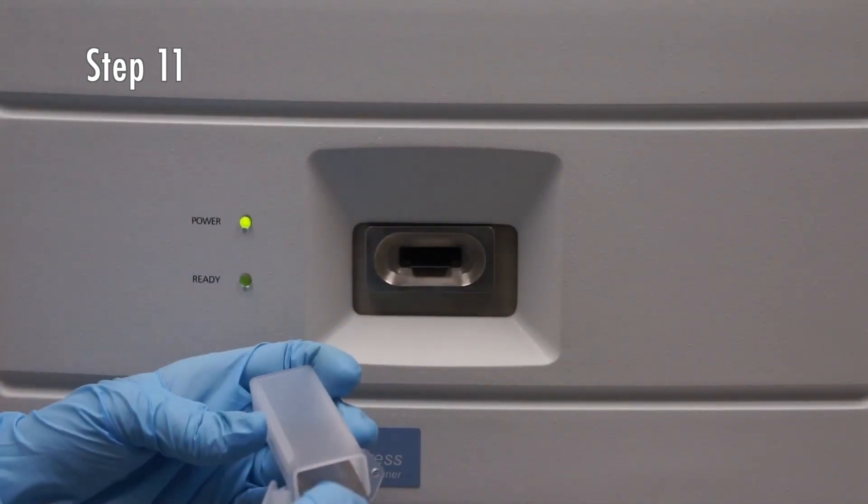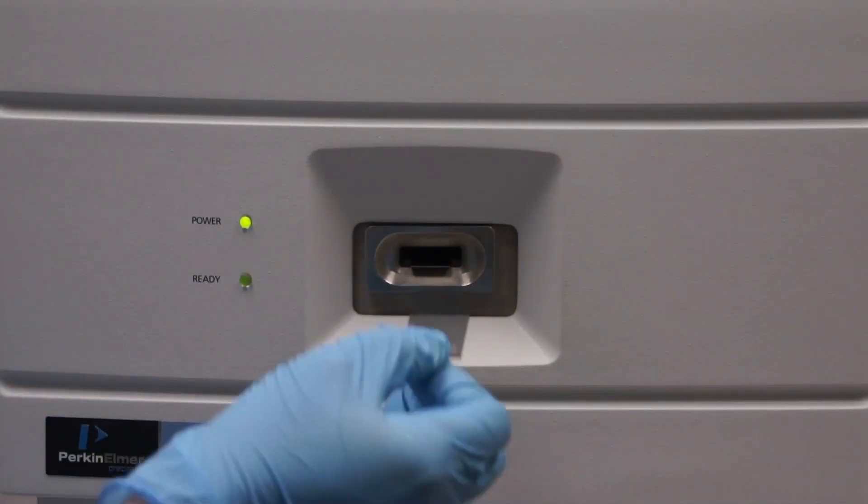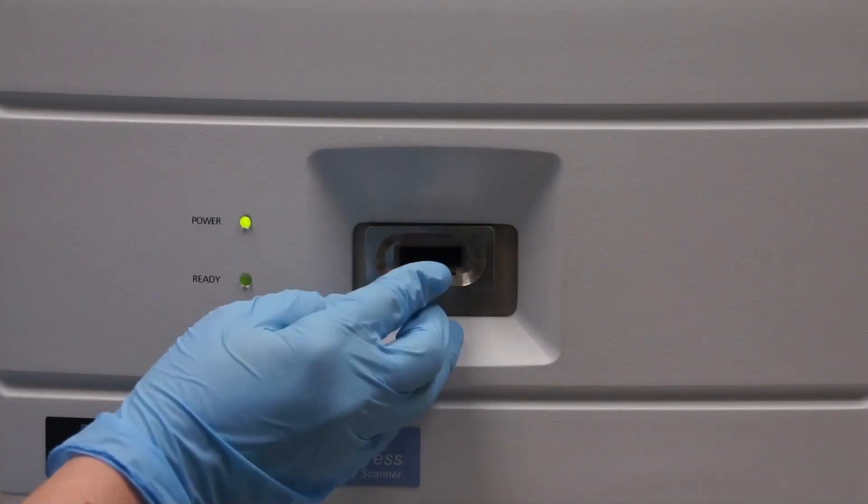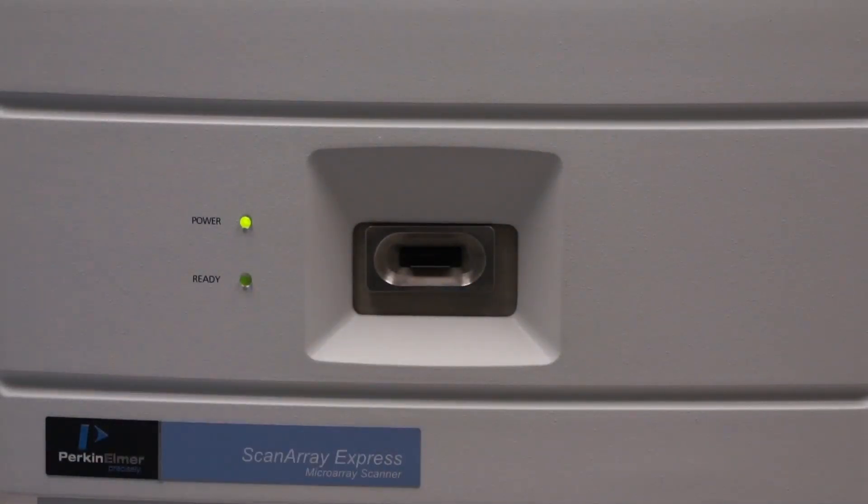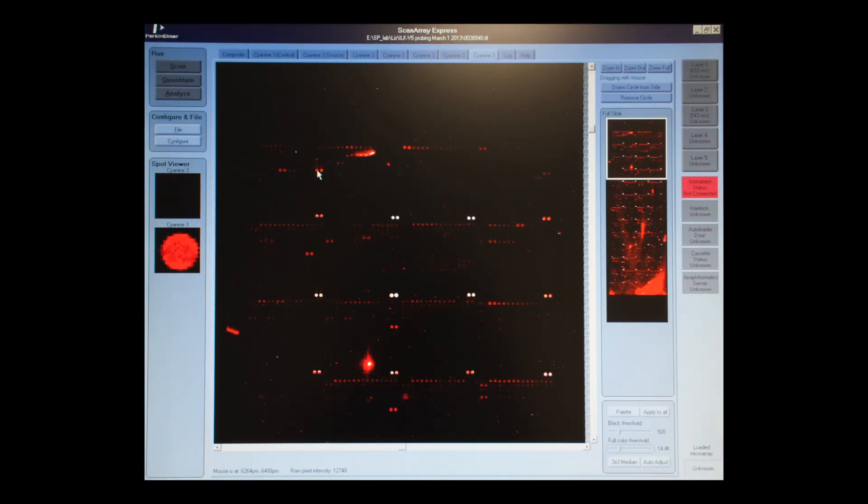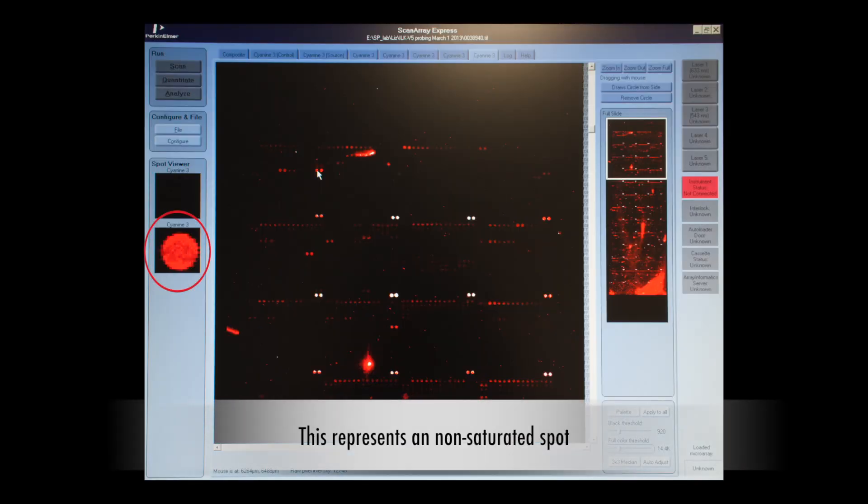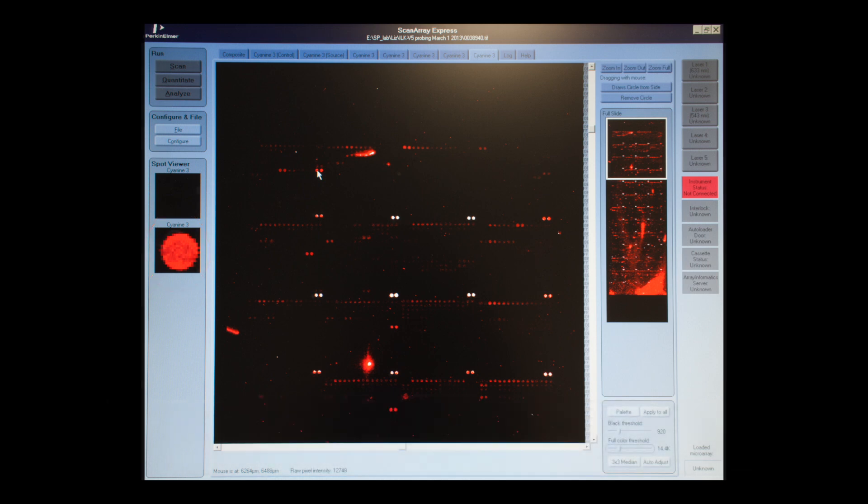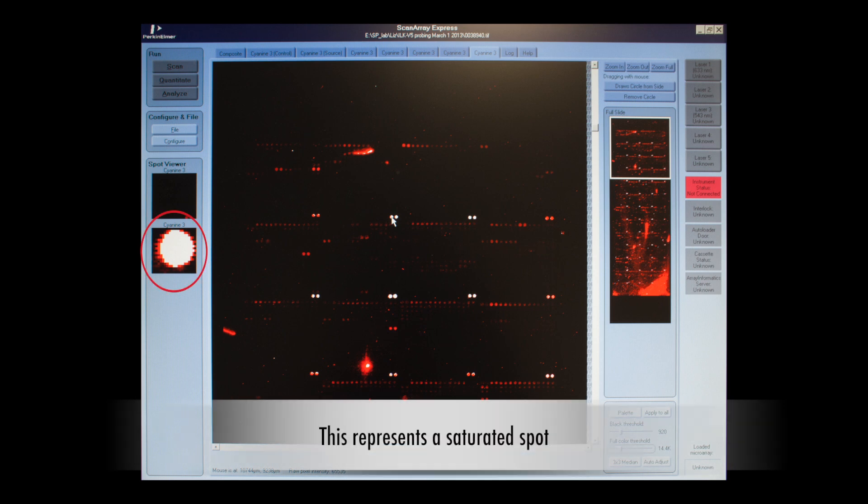Load the array into the scanner after warming up the lasers. Scan the array at a low resolution at 60 PMT to determine the location of the proteins on the slide and the brightness of the signal. Try different PMTs until the maximum number of non-saturated spots appear. Saturated spots will appear white depending on how your program colors the signal. Be sure to scan all of the slides at high resolution with the same PMT within a single experiment.